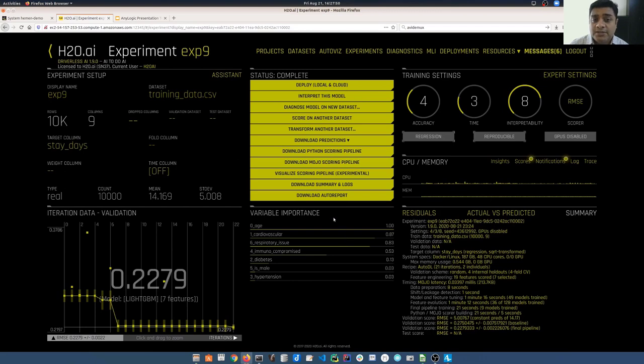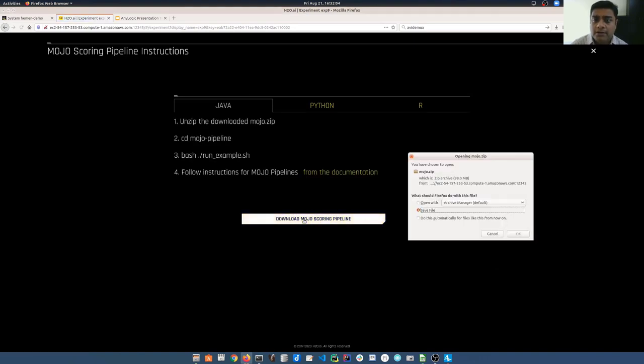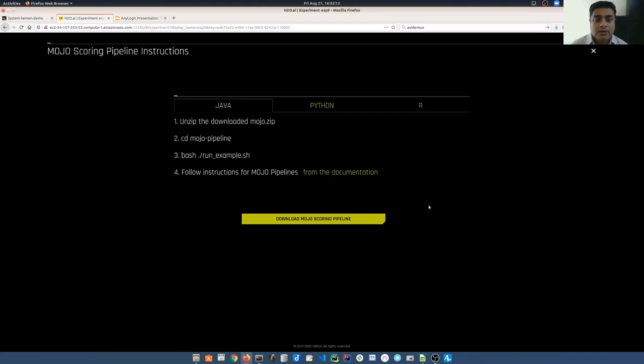We can see that Driverless AI performed multiple iterations trying to improve the score of the model that it produces. It also determined which attributes have a higher predictive power in terms of determining the duration of the hospital stay. There are additional information that is also available which you can go through. Once the experiment is complete you have the option of either downloading the Python Scoring Pipeline or the Java Mojo Scoring Pipeline. Since AnyLogic is a Java application and we want to embed the predictive model within an AnyLogic application I decided to go with the Mojo Scoring Pipeline and that's the main advantage of it. Click on this button to download the Java Scoring Pipeline. As you can see the Mojo.zip file is getting downloaded.